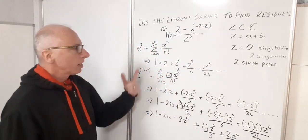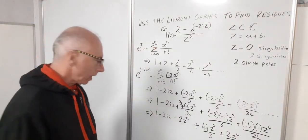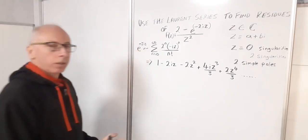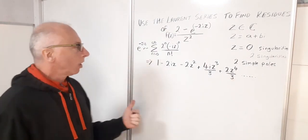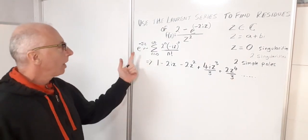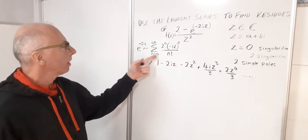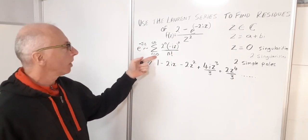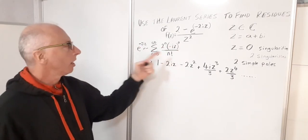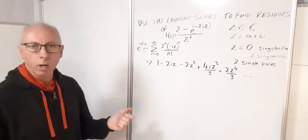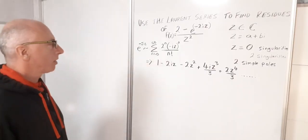So that's our expansion of e^(-2iz). We can write it as the sum from n = 0 to infinity of (-2iz)^n over n factorial, giving 1 - 2iz - 2z² + (4iz³)/3 + (2z⁴)/3 + …